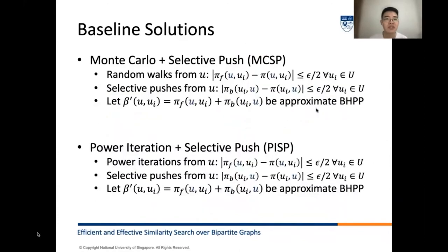Based on the three techniques, we can immediately obtain two baseline solutions for epsilon-approximate BHPP queries. That is, we can combine the Monte Carlo and the selective push by inputting error thresholds in both to epsilon over 2. The approximate BHPP can be computed by summing up the results returned by both methods. Similarly, we can combine the results by the power iterations and the selective push into the approximate BHPP.